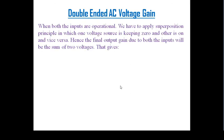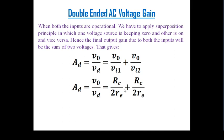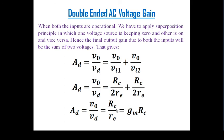Using the superposition principle, one voltage source is kept zero while the other is active, and vice versa. The final output voltage is the sum of both contributions. The total differential voltage gain V_out by Vd equals V_out by VI1 plus V_out by VI2, which gives RC divided by 2*re plus RC divided by 2*re, totaling RC divided by re.